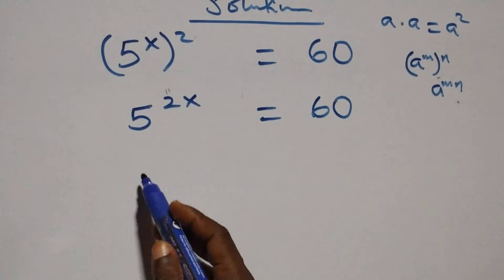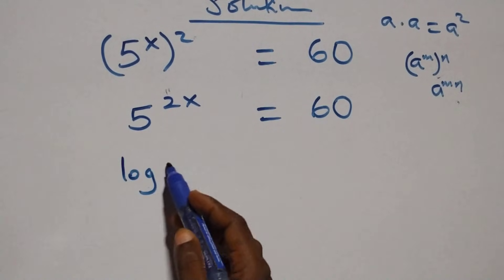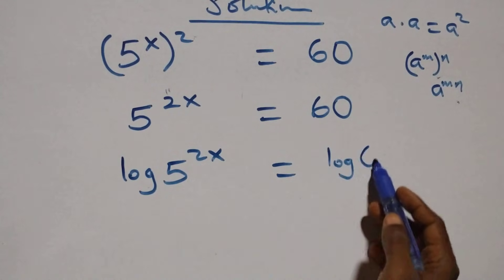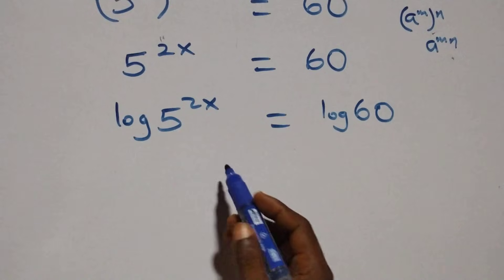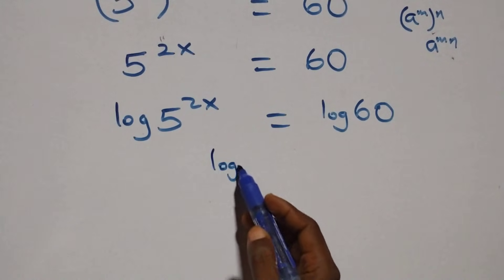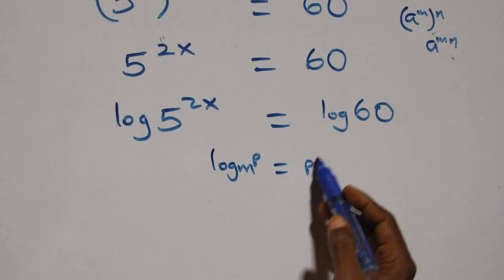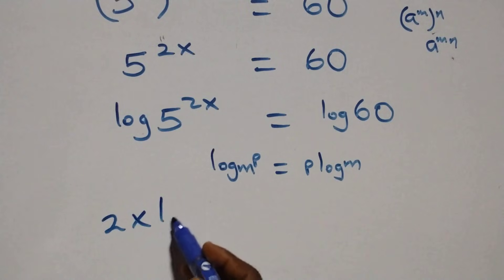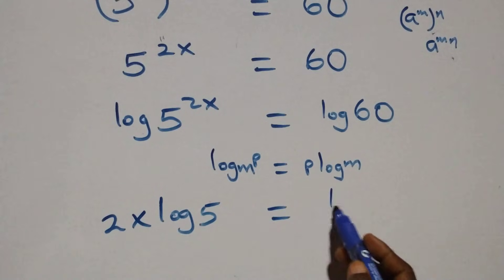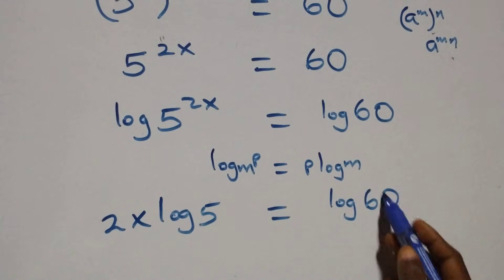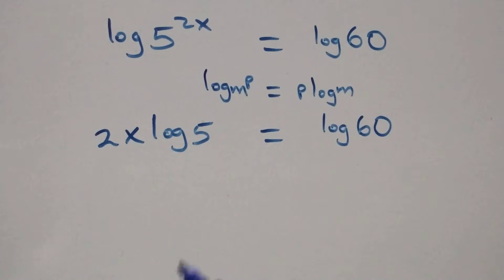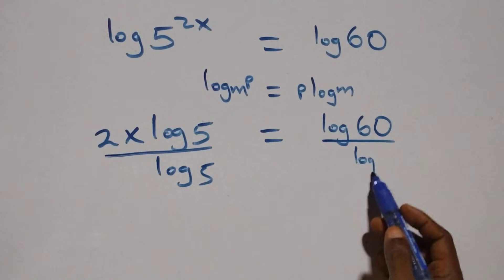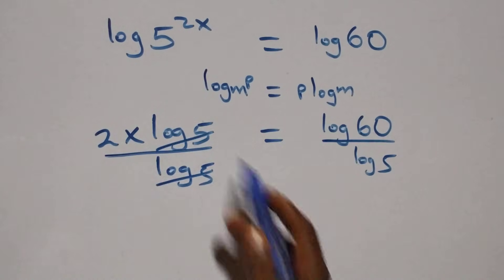We take the log on both sides: log of 5 raised to power 2x equals log 60. We then apply the power rule of logarithms, where log of m raised to power p equals p times log m. This gives us 2x times log 5 equals log 60. We then divide both sides by log 5, and log 5 cancels on the left.